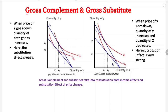For gross complement, we take good X on the X-axis and good Y on the Y-axis. Initially, the equilibrium is at point E0, where the consumer is consuming X0 of good X and Y0 of good Y. Now suppose because of a decrease in the price of Y, the budget line rotates upward, and the new equilibrium is at point E-dash on a higher indifference curve.